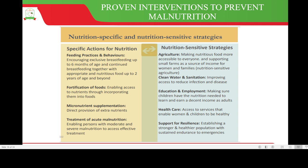Nutrition-sensitive strategies include agriculture — making nutritious food more accessible to everyone and supporting small farms as a source of income for women and families. Clean water and sanitation are key in improving access to reduce infection and disease. Education and employment ensure children have the nutrition needed to learn and earn a decent income as adults. Health care enables access to services for women and children, and support for resilience establishes a stronger and healthier population with sustained endurance to emergencies.